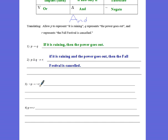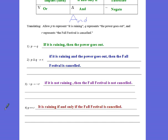This one here we are negating. P implies negated R. So remember negate means that we're sort of doing the opposite. So if it is not raining then the fall festival is not cancelled. And then finally it looks like we have a biconditional here. So remember biconditional means we drop if we drop then and we put if and only if in the middle. So it is raining if and only if the fall festival is cancelled. Another way we could write that is the fall festival is cancelled if and only if it is raining.